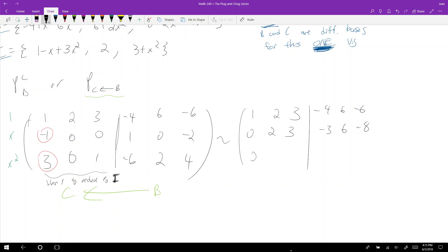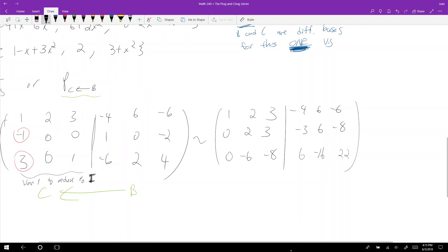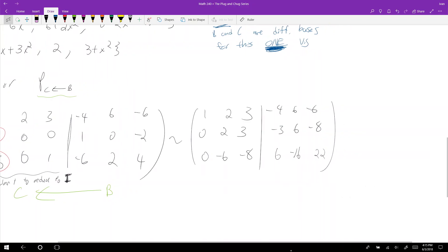So I added row one to row two. This becomes negative 3, 6, negative 8. And then row three minus three times row one: 0, negative 6, negative 8, and then positive 6, negative 6, negative 16, 22.